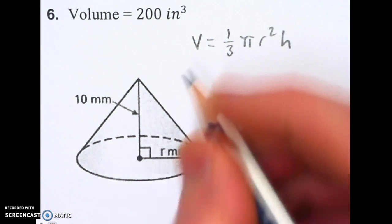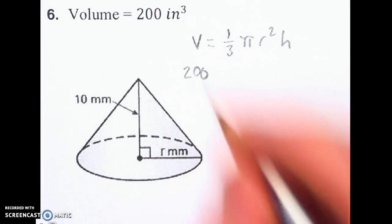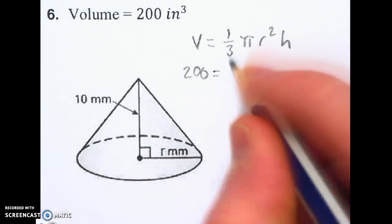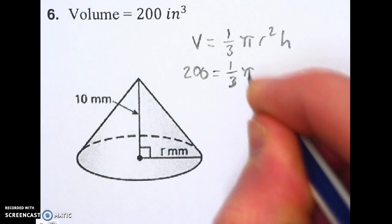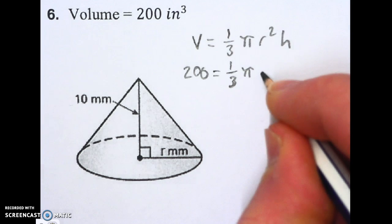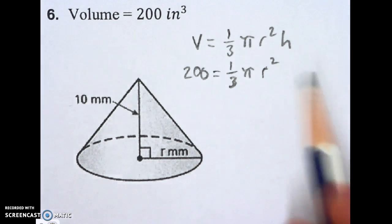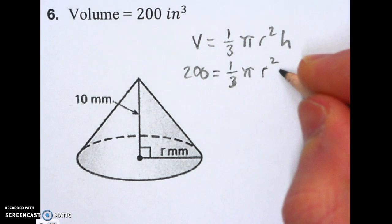I'm going to plug in my volume, which is 200, just plugging in my pieces. One-third pi. I don't have r, so I still have r squared. I'm going to need to find that. And I do have my height, so I'm going to plug in my 10.